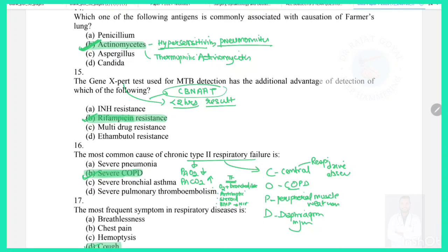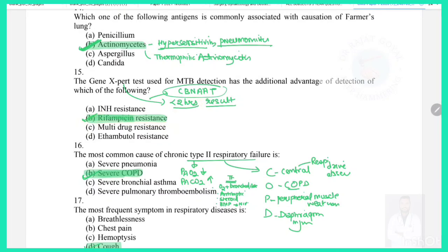Question 14: Which antigen is commonly associated with farmer's lung? Farmer's lung is associated with thermophilic actinomycetes and leads to hypersensitivity pneumonitis. Question 15: Gene Xpert test used for MTB detection has the additional advantage of detecting rifampicin resistance — if rifampicin resistance is present, it can be identified by Gene Xpert (CBNAAT), which gives results in less than two hours.